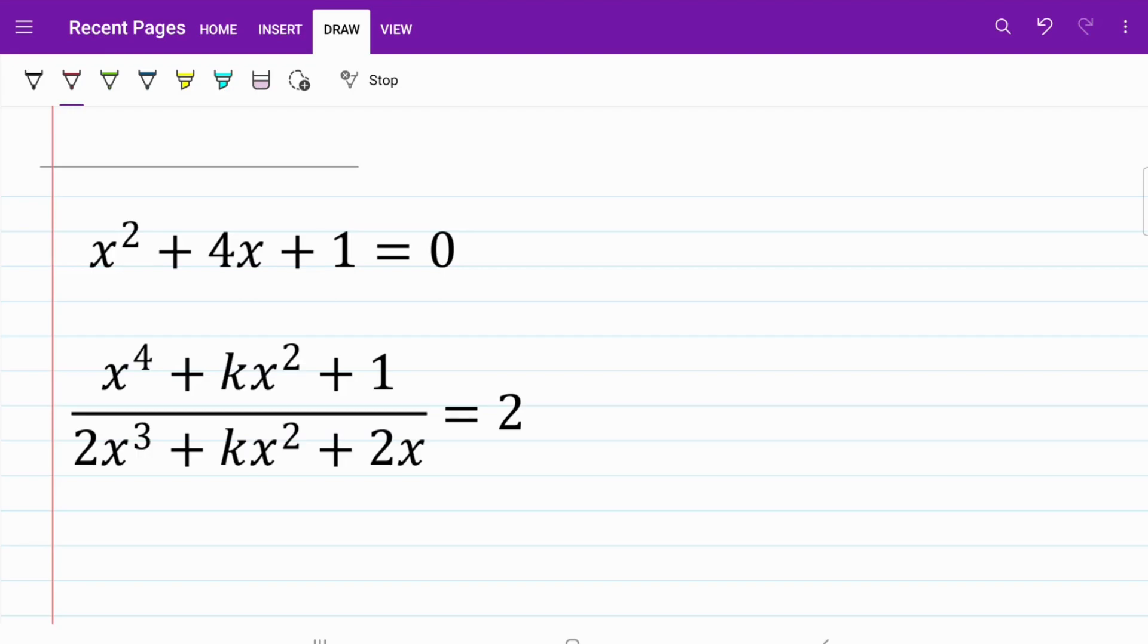We are given the equation x squared plus 4x plus 1 equals 0, and we need to make use of this information to solve for the unknown k within a very complex looking equation. Just by looking at the fraction, we know that directly substituting the first equation is probably not going to work.